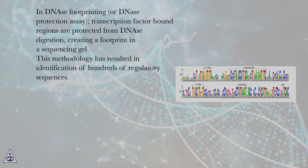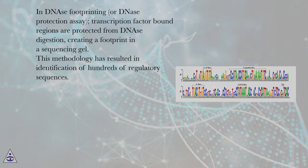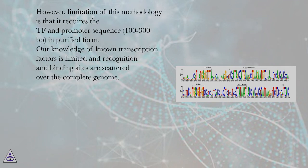In DNA-ase footprinting, or DNA's protection assay, transcription factor-bound regions are protected from DNA-ase digestion, creating a footprint in a sequencing gel. This methodology has resulted in identification of hundreds of regulatory sequences. However, a limitation of this methodology is that it requires the TF and promoter sequence — 100 to 300 bp — in purified form.